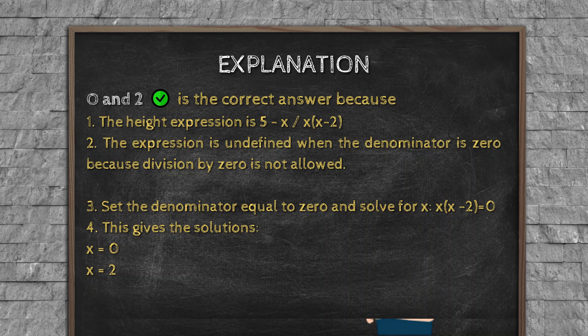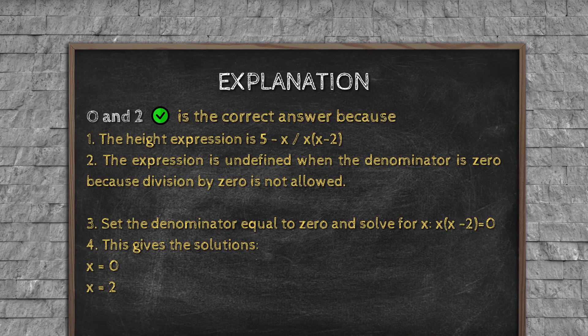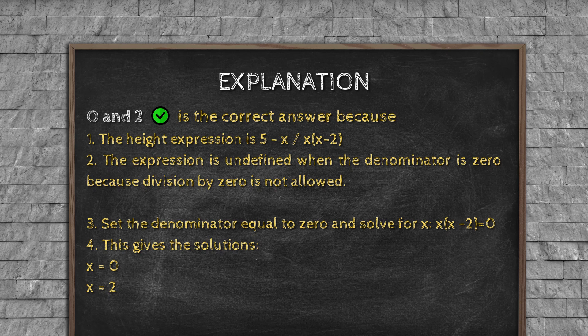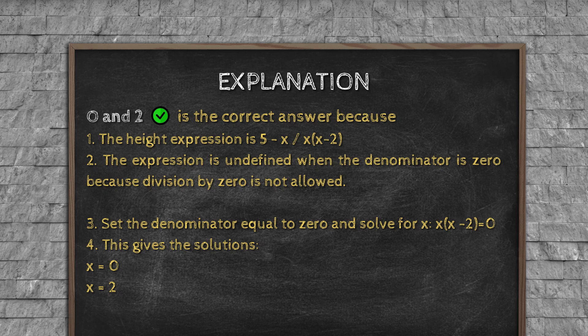Explanation: 0 and 2 is the correct answer because: 1. The height expression is 5x/(x(x - 2)). 2. The expression is undefined when the denominator is 0 because division by 0 is not allowed. 3. Set the denominator equal to 0 and solve for x: x(x - 2) = 0. 4. This gives the solutions x = 0, x = 2.